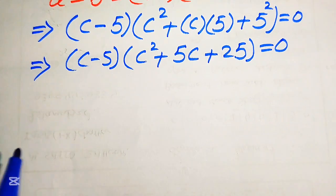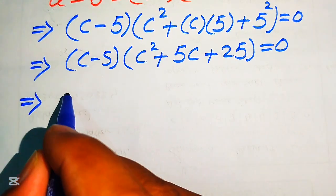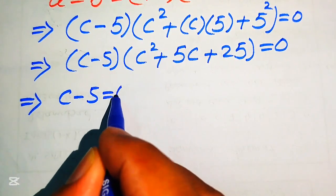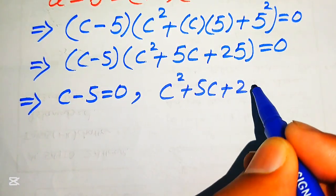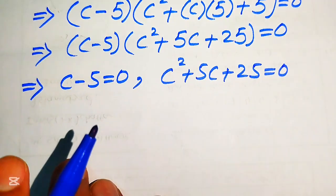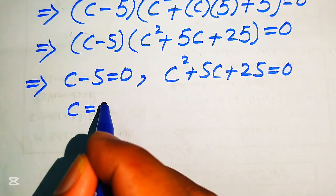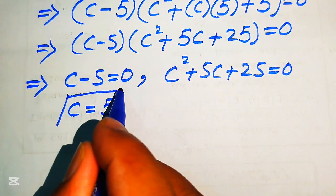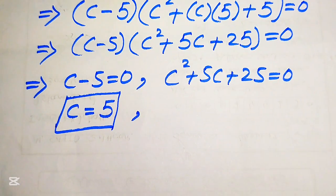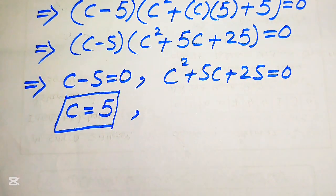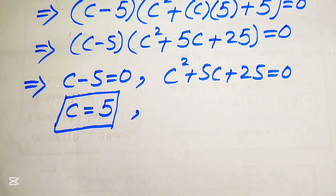In the next step we divide this equation into two cases. The first case is c minus 5 equals 0, and the second case is c squared plus 5c plus 25 equals 0. From the first case we easily get c equals 5. From the quadratic equation we need to find two more roots, since our original equation is cubic and has three roots total.